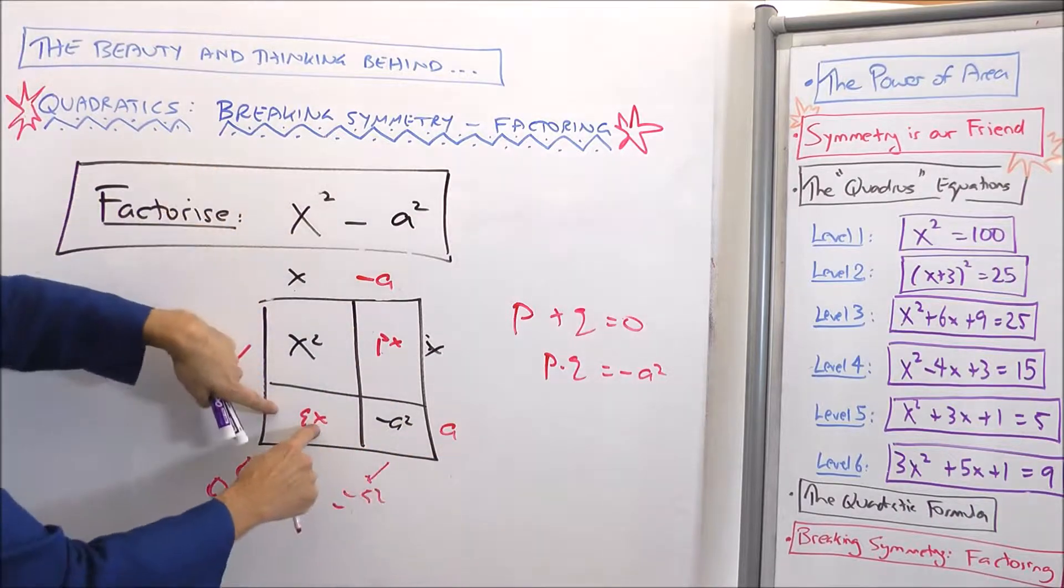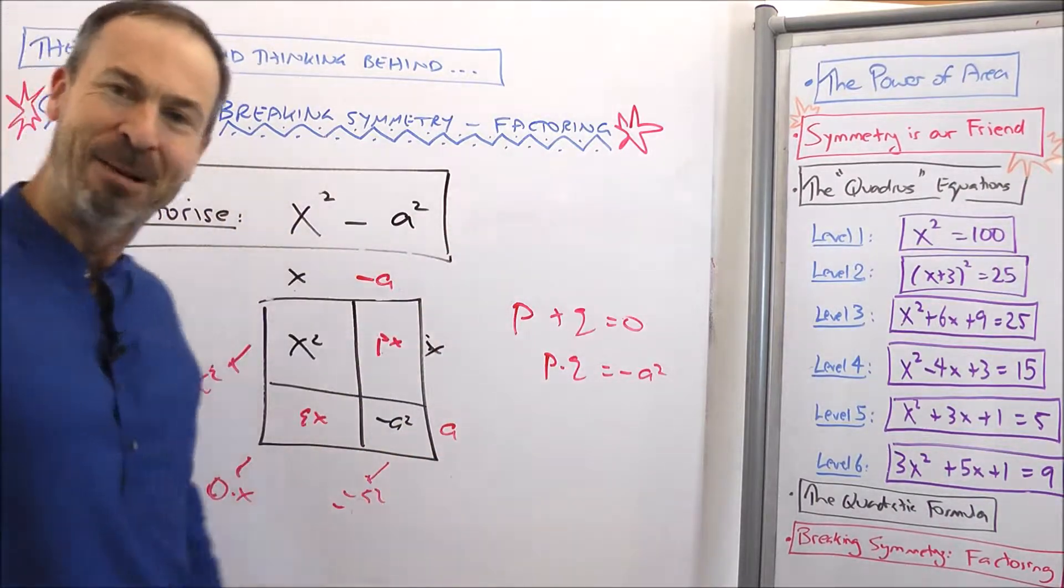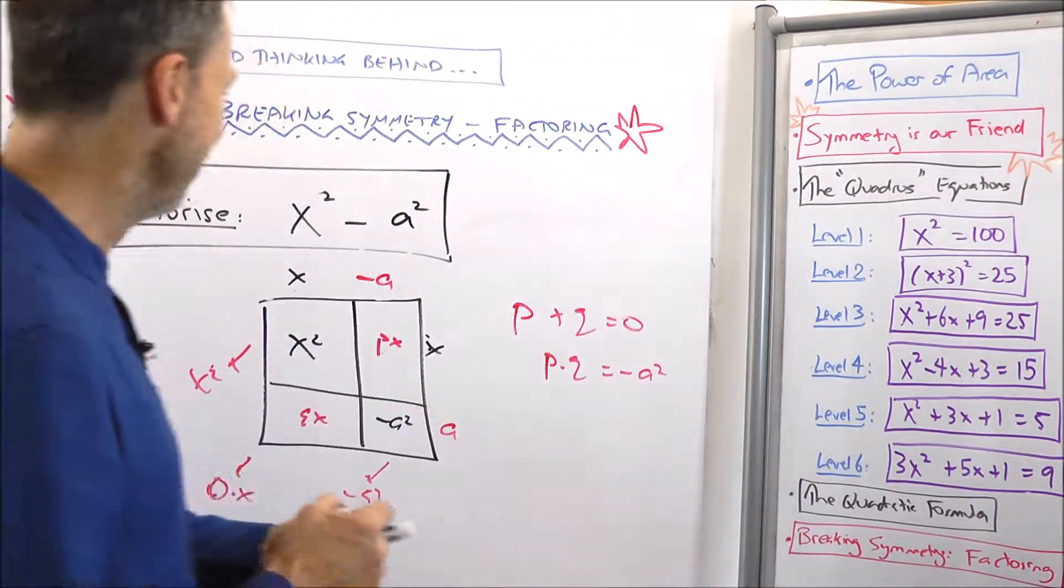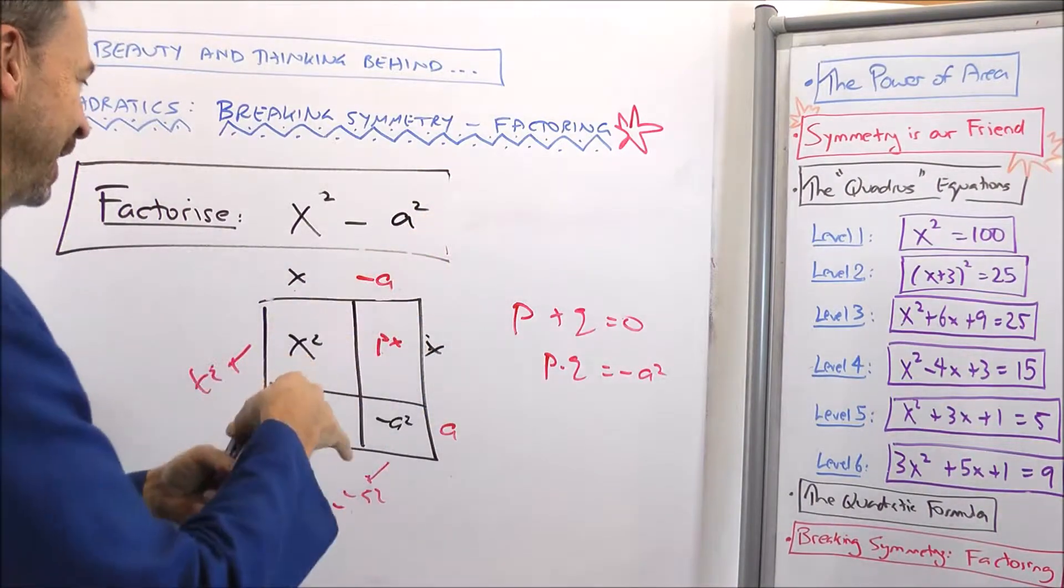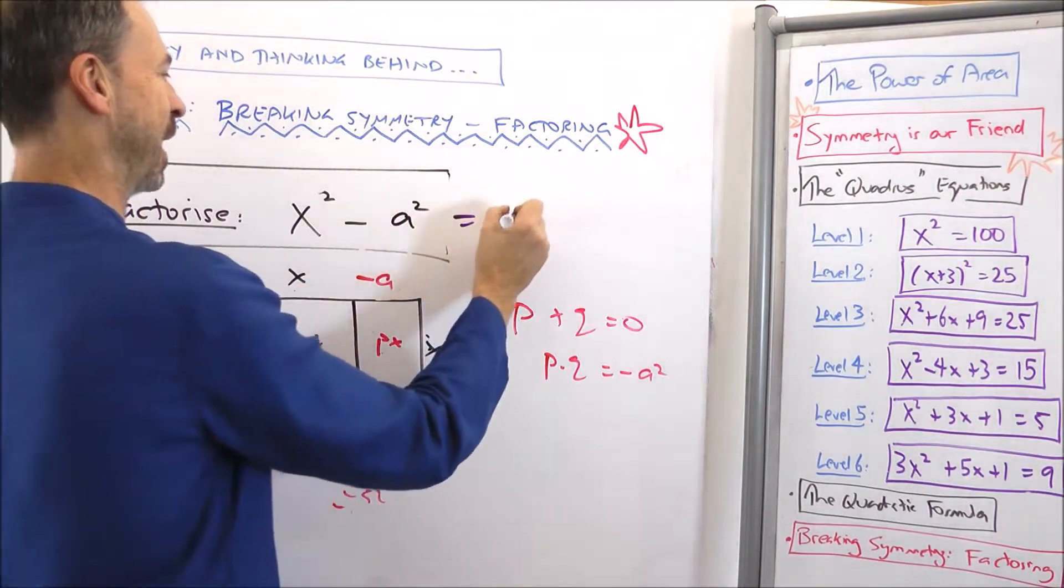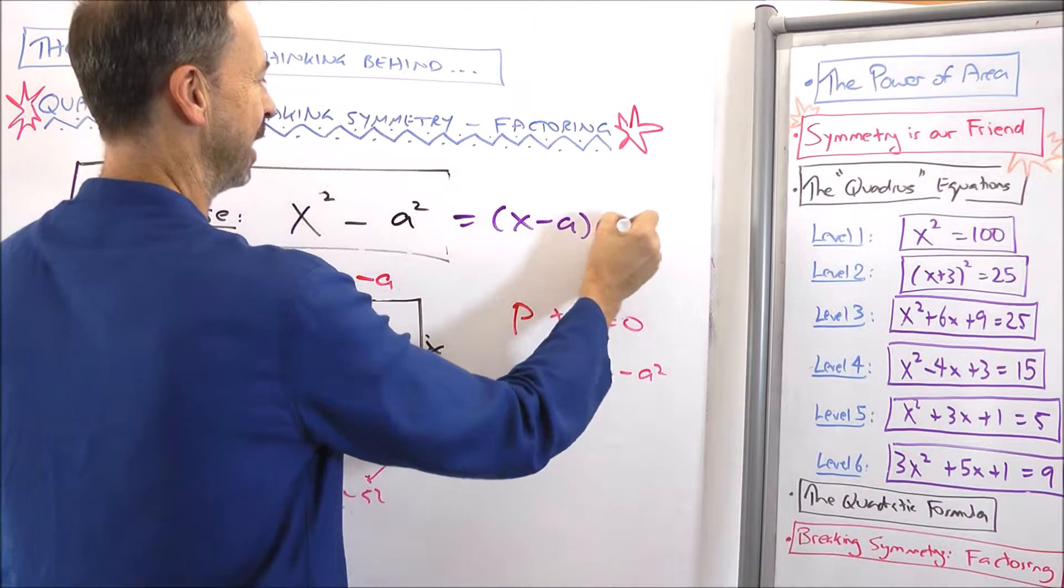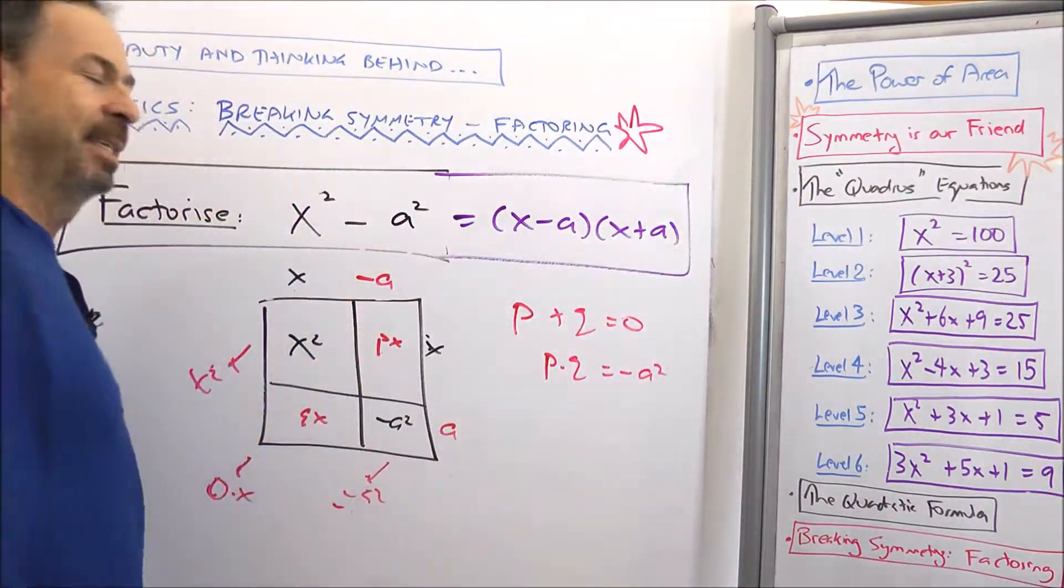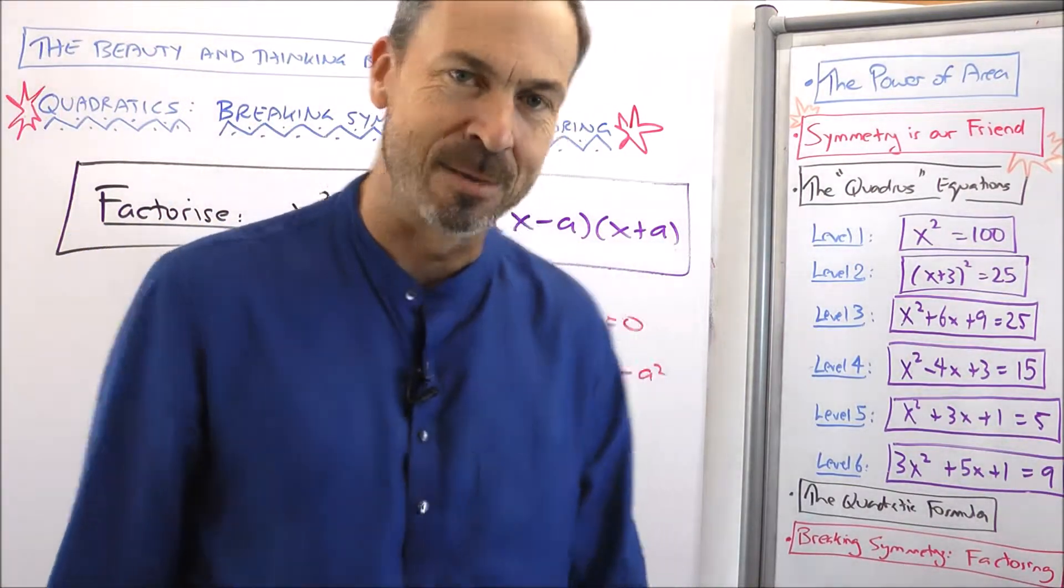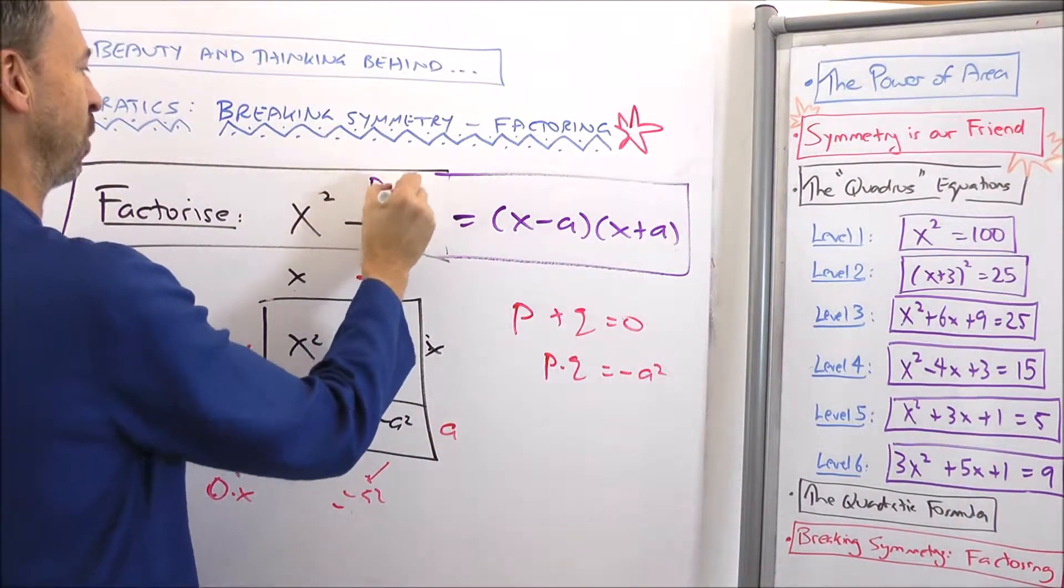A times negative a is negative a squared. Negative ax, positive ax, put them together, would be zero x's. So in general, if I factorize x² - a², this is (x - a)(x + a).